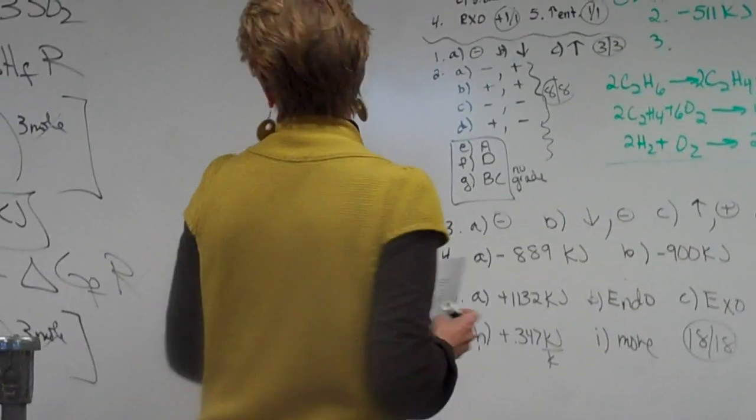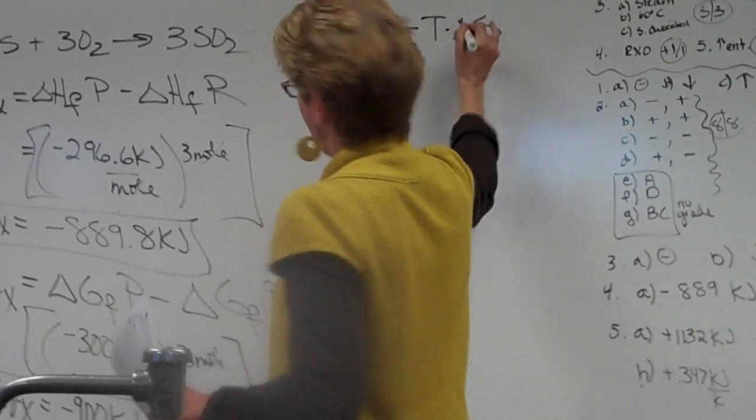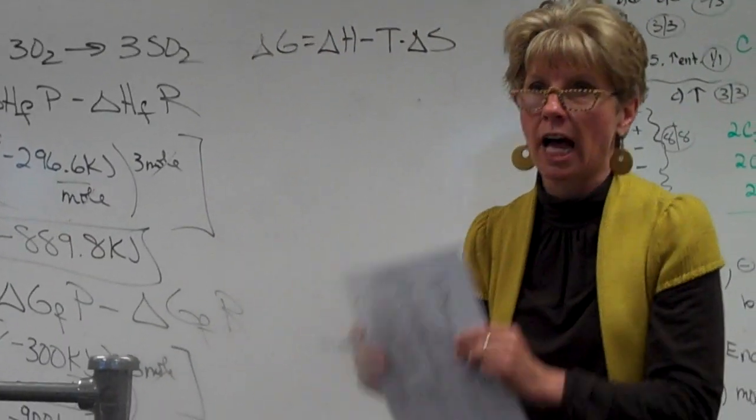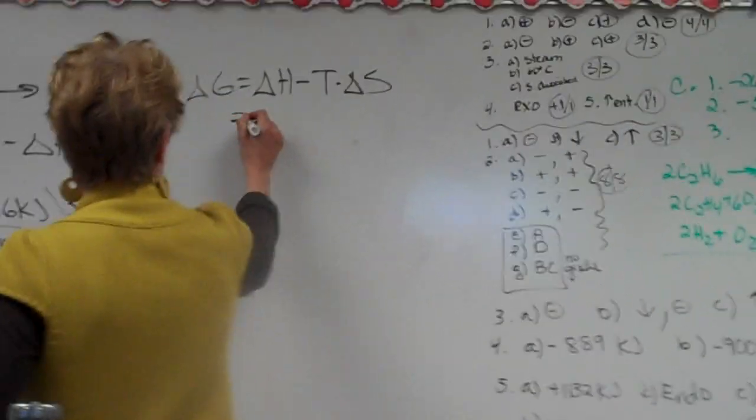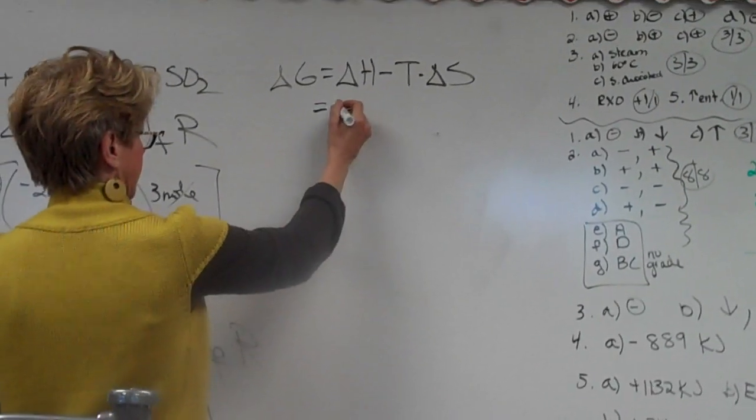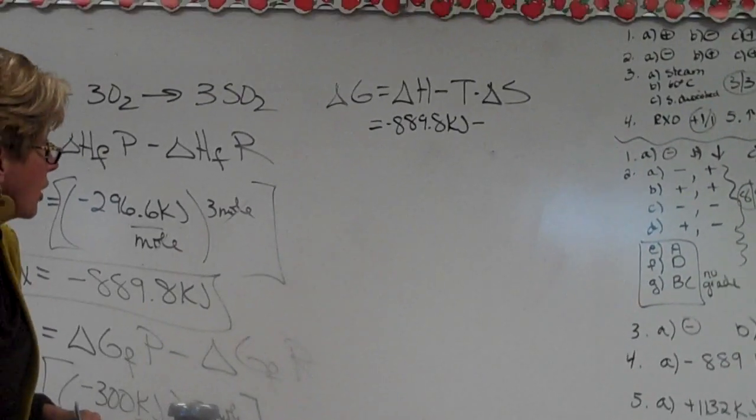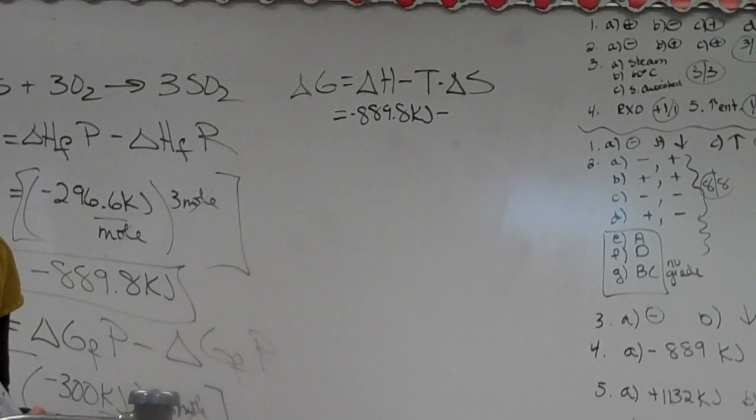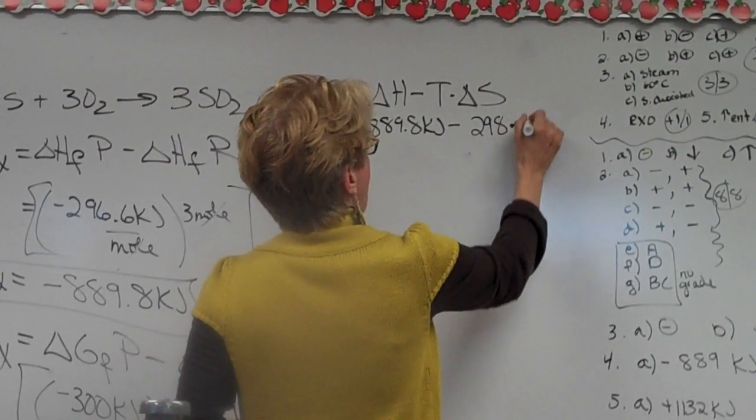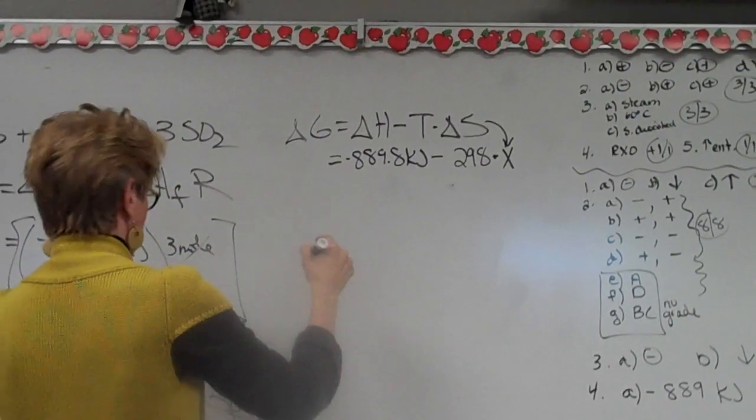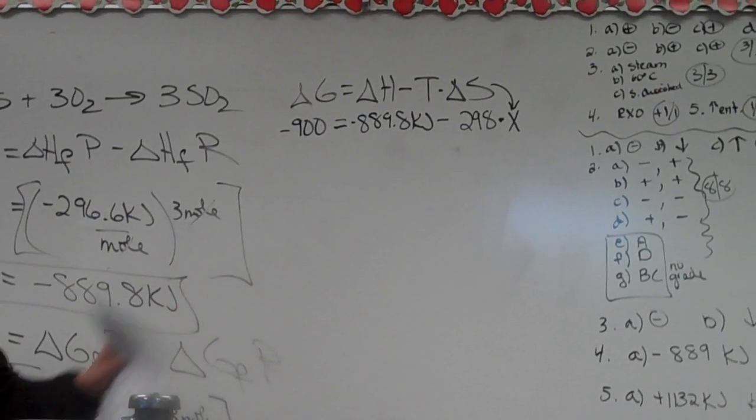Okay? Then for the last part, we're going to use delta G equals delta H minus temperature times delta S. Because table P does not have entropy values in it, right? So what are we going to plug in for delta H? Negative 889.8 kilojoules minus the temperature. What's the temperature in this thing? Look, right up here. 298 Kelvin. 298 times X. Let's make delta S X. And what was delta G? Negative 900, right? So now, how are we going to get this along?